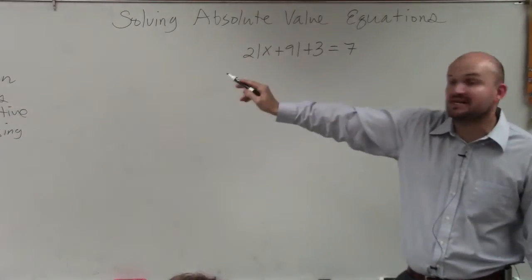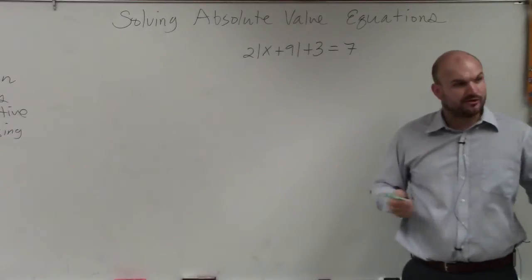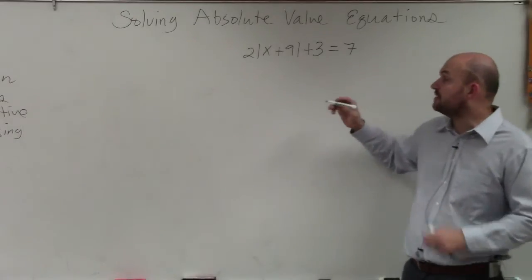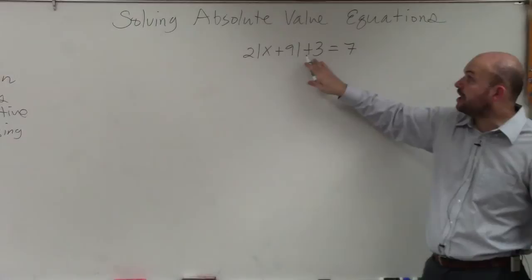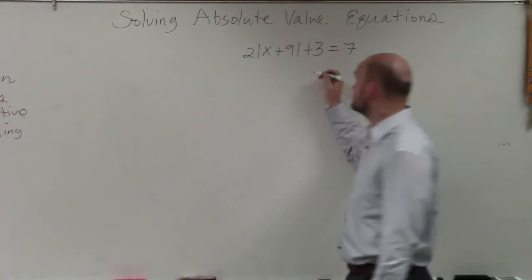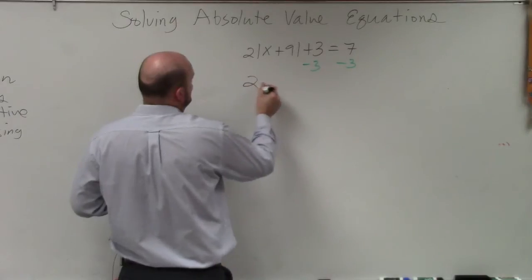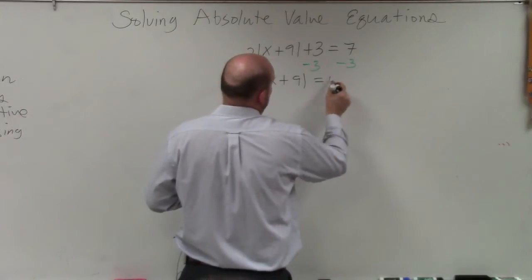So the first thing we need to do is isolate the absolute value. We need to undo these operations. Just like you're solving an equation, undo the operations using your inverse operations. We always use reverse order of operations, meaning we're going to undo adding and subtracting first. So therefore, I have 2 times the absolute value of x plus 9 is equal to 4.